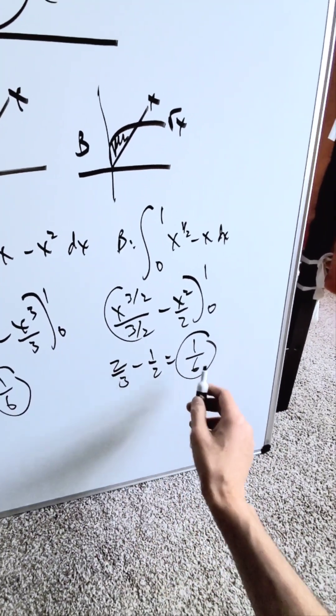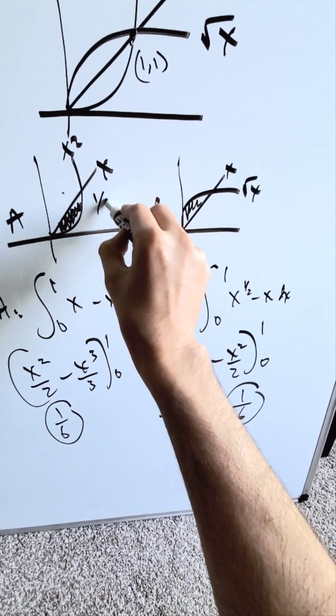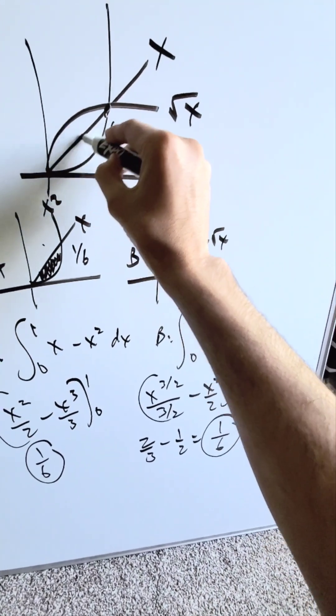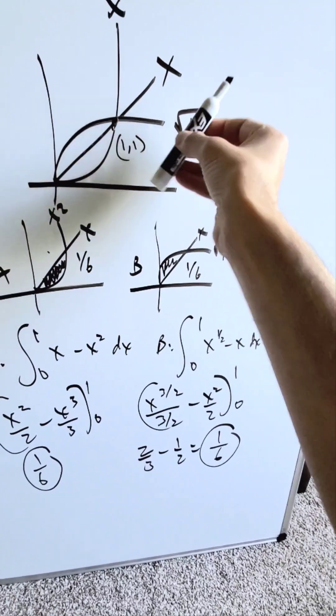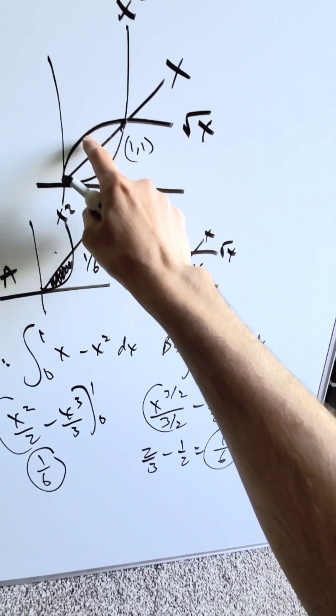Area A equals 1/6, area B equals 1/6, and this is exactly what it is. This is 1/6, this is 1/6. You're seeing that this function y equals x serves as a good divider or separation between these two separate areas which are equal to one another.